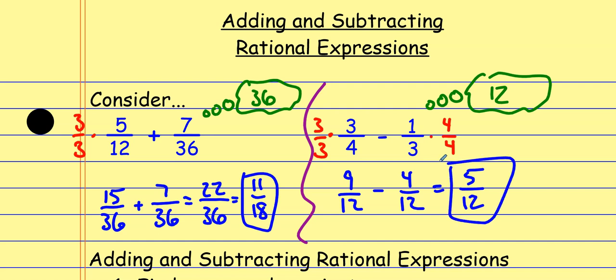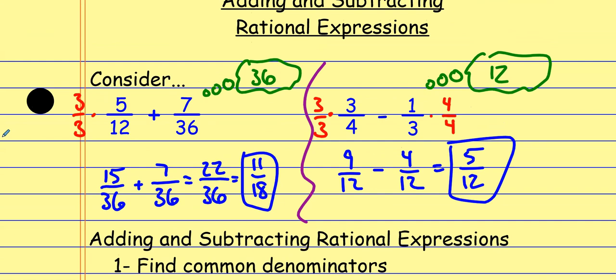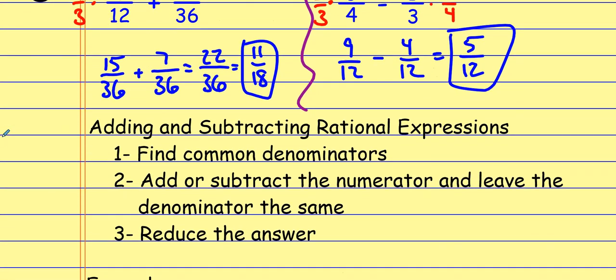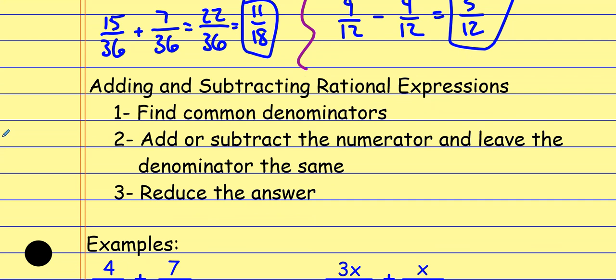The thing about this is that the only thing that makes this easier than what we're about to do is the fact that we understand how numbers work so well that we can immediately look at that and say the least common multiple is 36 or the least common multiple is 12. Because our understanding of numbers is very thorough. With rational expressions, we might have to work a little bit harder to get that common denominator. So let's start off with some easy ones. Adding and subtracting rational expressions — we have to find common denominators just like we did with regular old numbers, then add or subtract the numerator and leave the denominator the same. And then we reduce the fraction if we can.